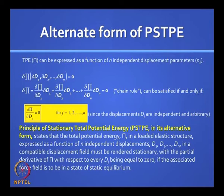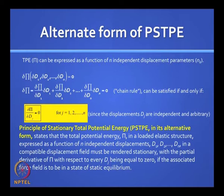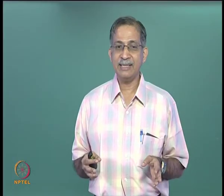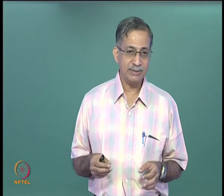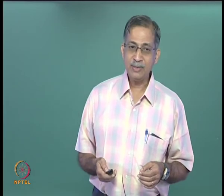In this form, the theorem states that when π is expressed as a function of independent displacements D1, D2, etc. in a compatible displacement field, it must be rendered stationary with the partial derivative of π with respect to every Dj equal to zero, if the associated force field is to be in static equilibrium. The word 'stationary' in calculus refers to a point that could be a maximum, minimum, or inflection. For a linear elastic stable structure the stationary point is a point of minimum energy, so it is more popularly known as the principle of minimum total potential energy (PMTPE).